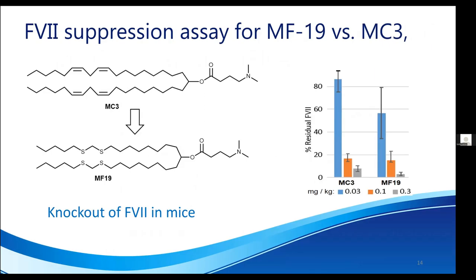In another experiment, knockout of factor VII in mice was investigated for MF19 versus MC3. In terms of efficacy in the factor VII assay, MF19 was at least as potent as MC3 with almost complete knockdown at 0.3 milligrams per kilogram. This result supports the hypothesis that replacement of the potentially troublesome cis double bond system with a sulfur atom retains or possibly enhances bioactivity.